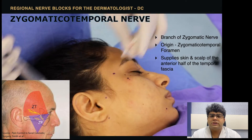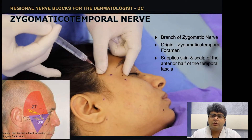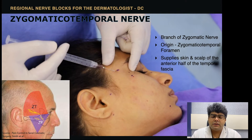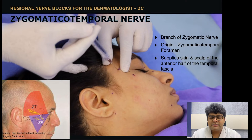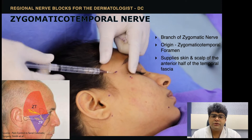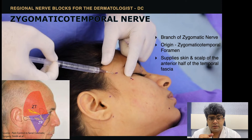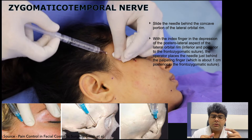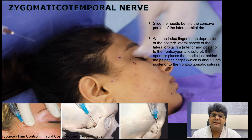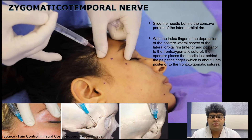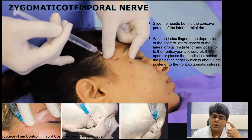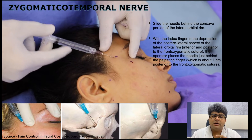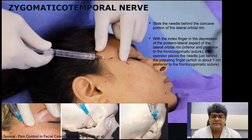The zygomaticotemporal nerve is used when we want to anesthetize the anterior temple area. It is a branch of the zygomatic nerve, and its origin is at the zygomaticotemporal foramen. We slide the needle behind the concave portion of the lateral orbital rim. You can also see on the skull where the foramen is placed, and that is how we go in behind and inject it.